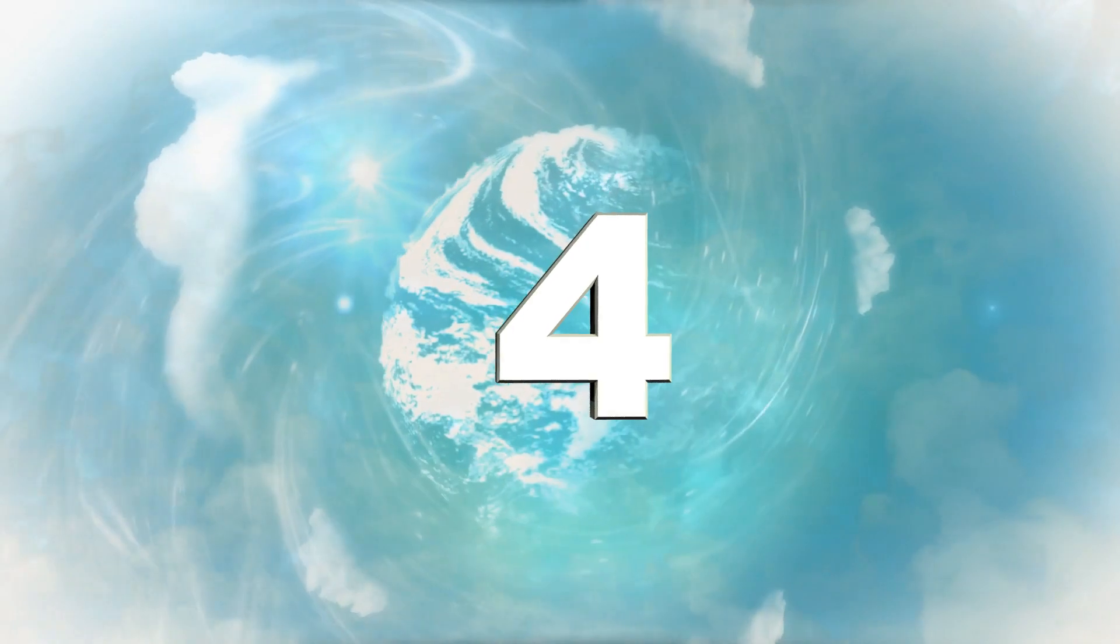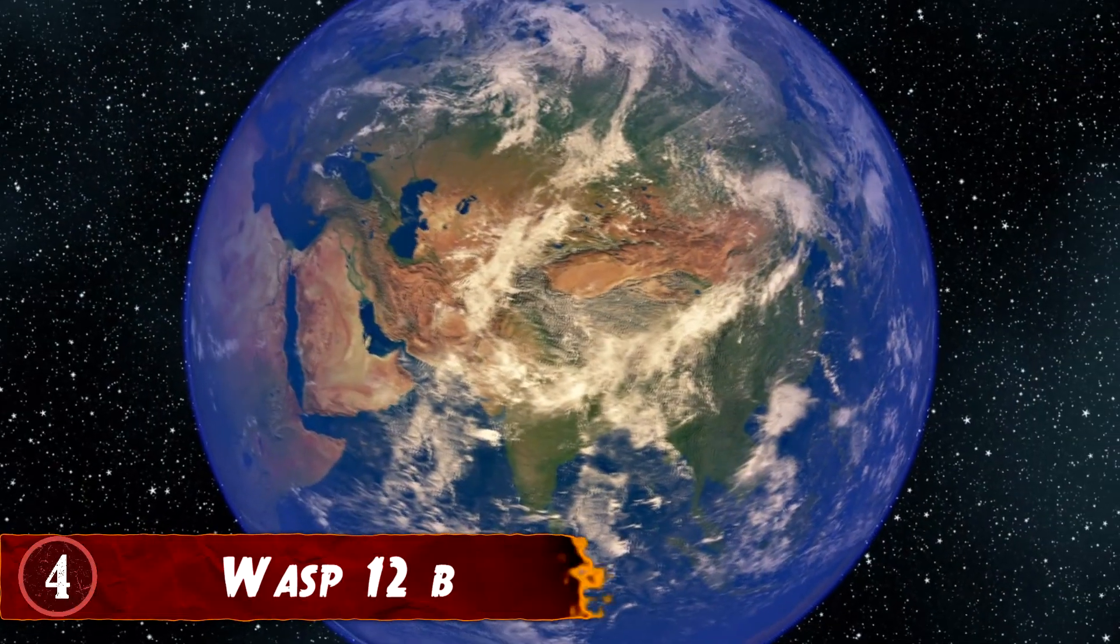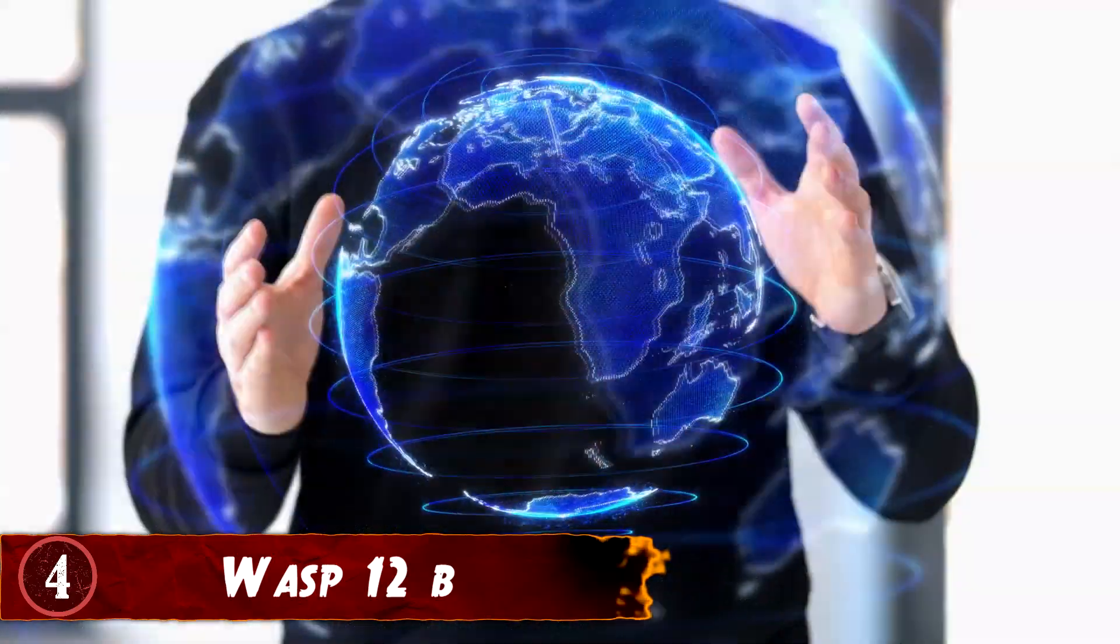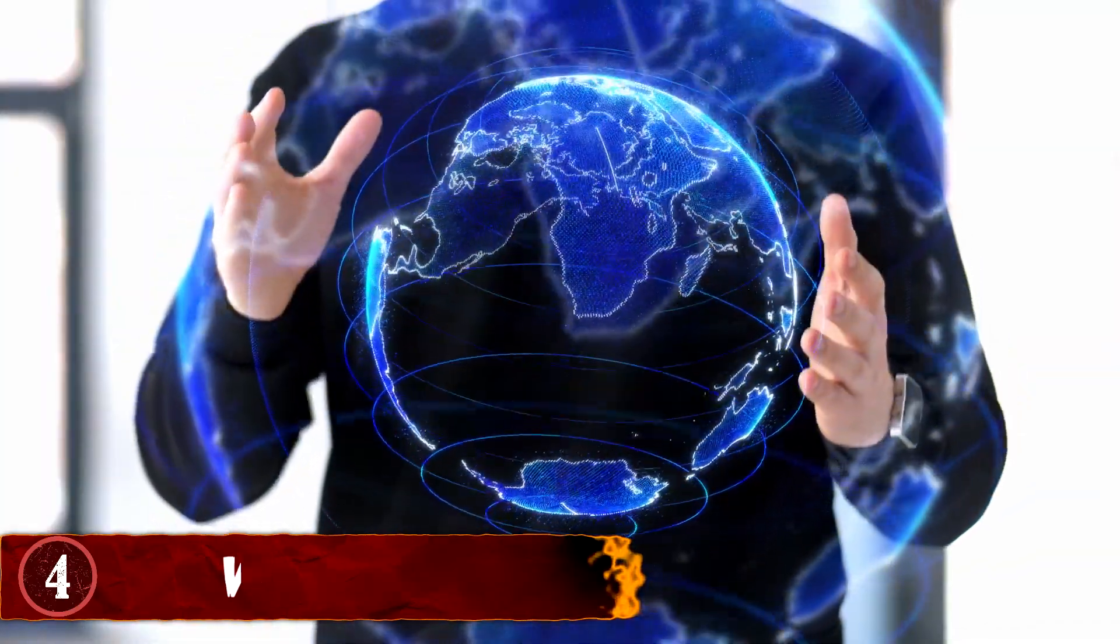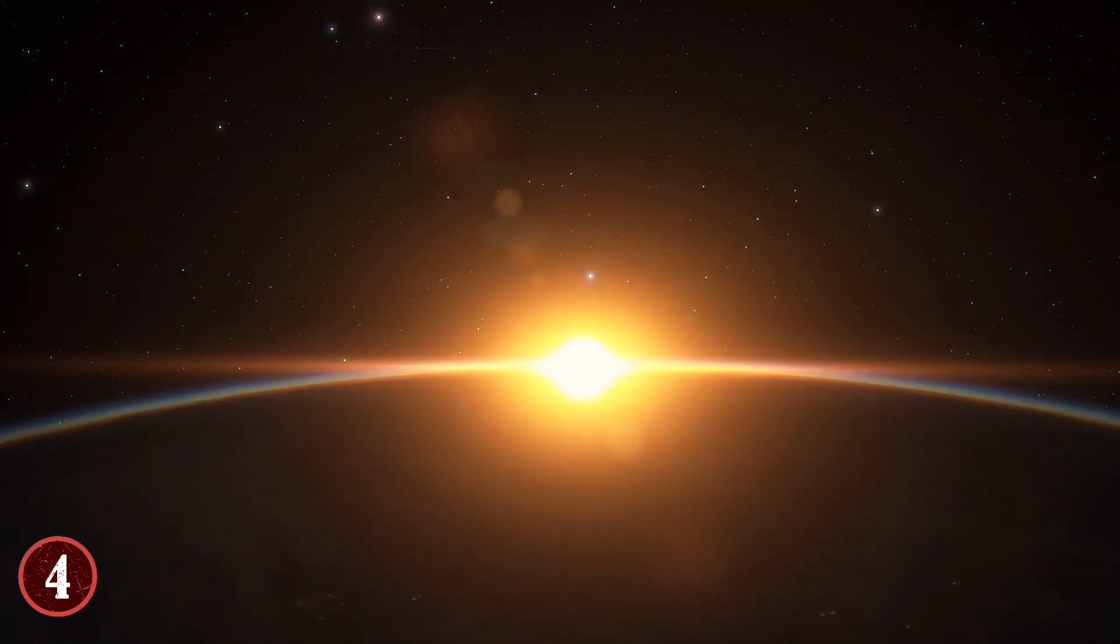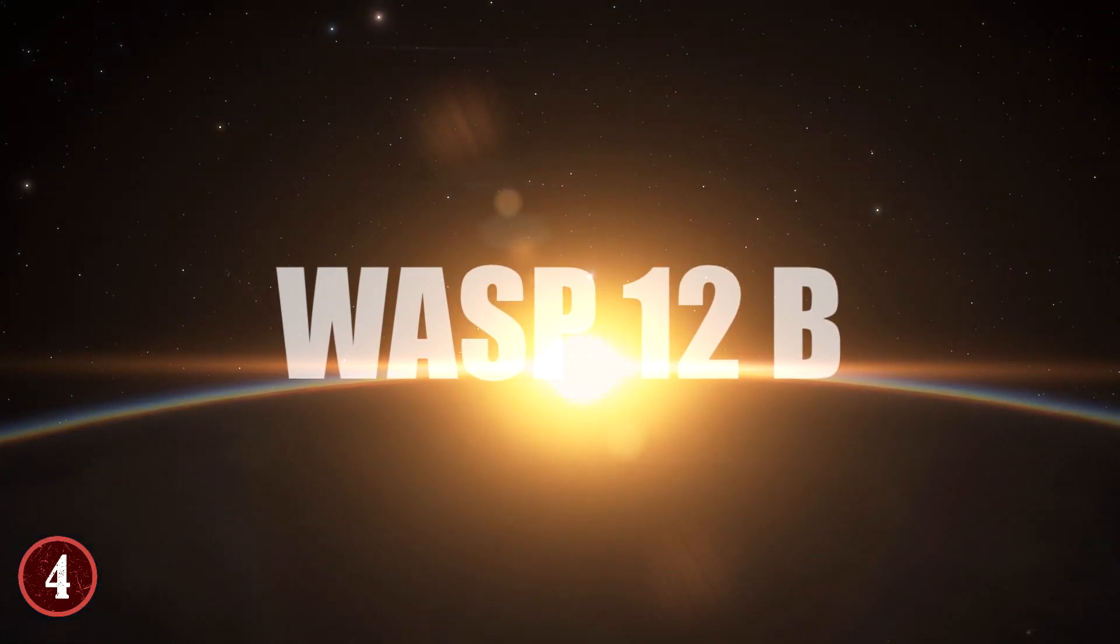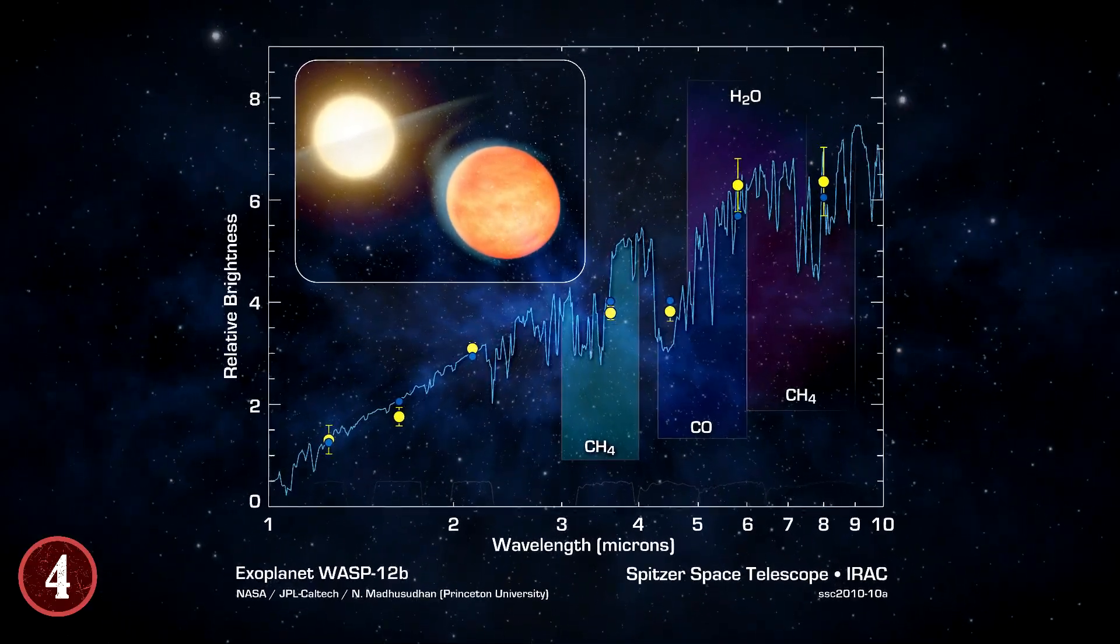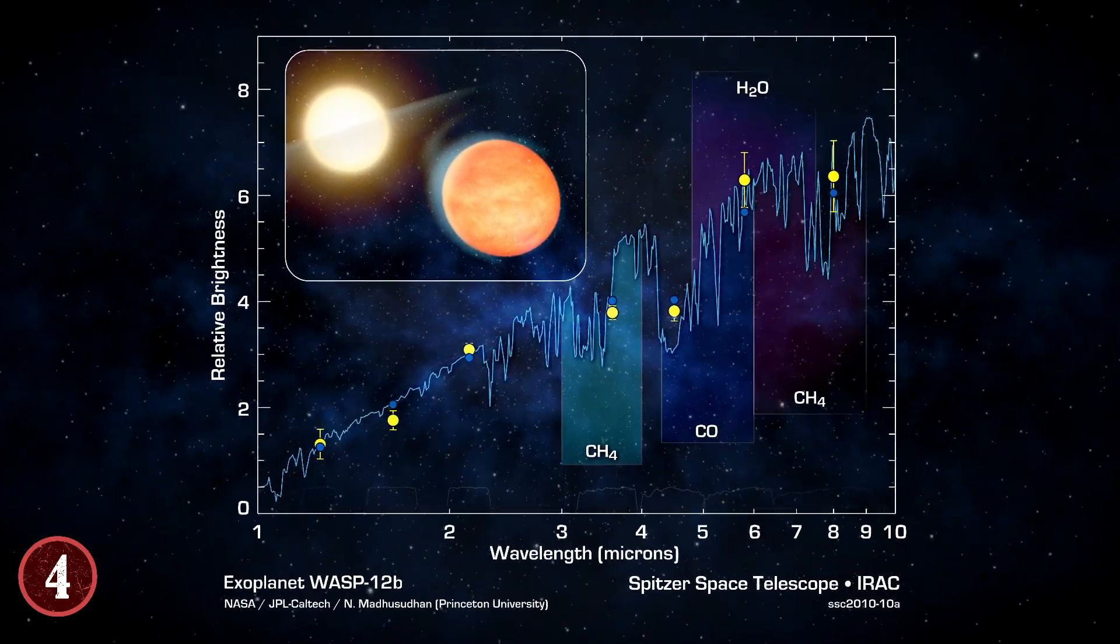Number 4: WASP-12b. I want you to take a second and think about the shape of our planet. If you were to call it a shape, you would no doubt say it's a sphere, right? No true elongation within it. However, the same cannot be said for the planet known as WASP-12b. For this is a planet that is well and truly elongated, and it has to do with the sun that it's revolving around.